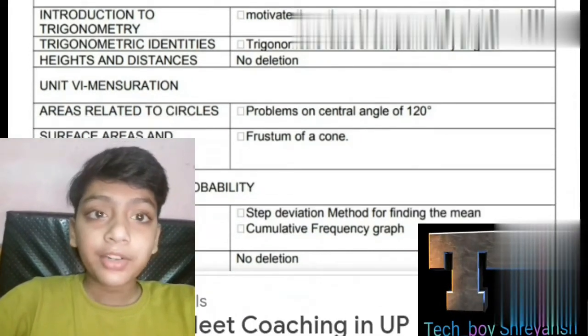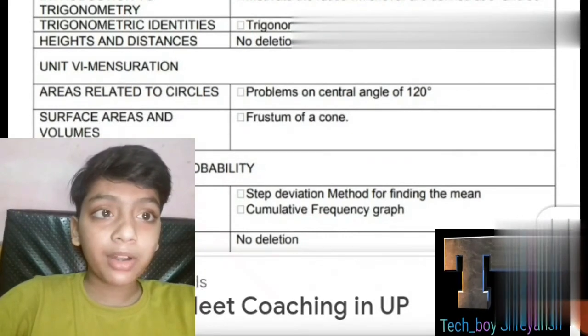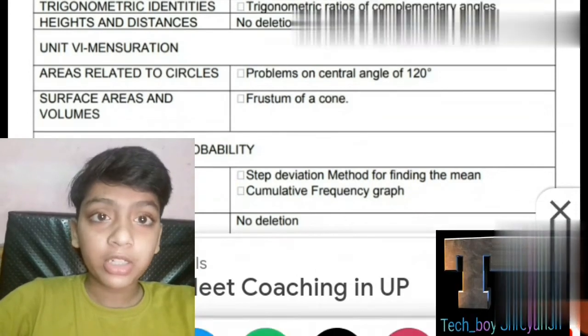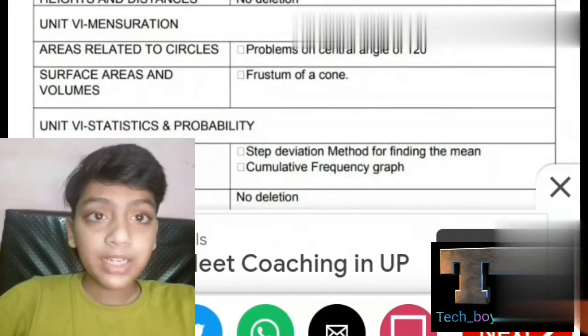In trigonometric identities, trigonometry ratios of complementary angles are deleted. Heights and distances - no deletions. In mensuration, areas related to circles, problems on central angle of 120 degrees are deleted.